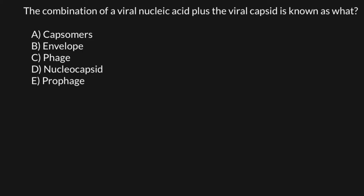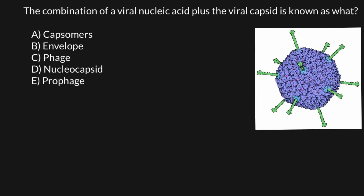Answer A: Capsomers. If you take a look at this picture, you would see adenovirus here. Usually such viruses infect eukaryotic cells, and this is about how a virus that causes flu would look like. You would see that this outer layer of the virus, which is made of proteins, which we call the capsid, is made of small units which we call capsomers.